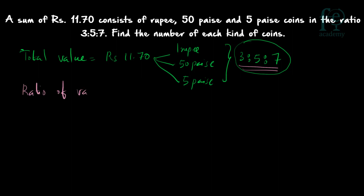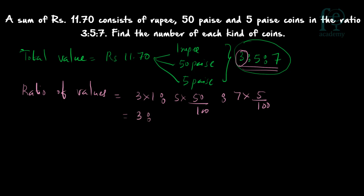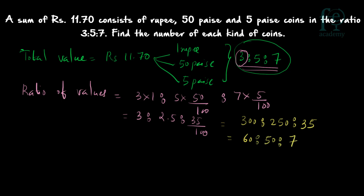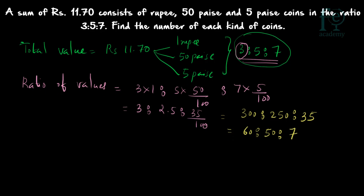From the number ratio, find the value ratio. For 3 one-rupee coins, value = 3×1 = 3. For 5 fifty-paise coins, value = 5×(50/100) = 2.5. For 7 five-paise coins, value = 7×(5/100) = 0.35. Taking LCM 100, the ratio becomes 300:250:35, simplified to 60:50:7.